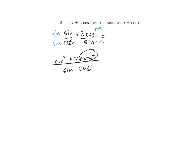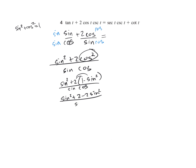We're going to change cosine squared to 1 minus sine squared. Remember, sine squared plus cosine squared equals 1, so 1 minus sine squared is cosine squared. So we have plus 2 times 1 minus sine squared, and distribute the 2 through, giving us sine squared plus 2 minus 2 sine squared all over sine cosine. That simplifies to negative sine squared plus 2 all over sine cosine.